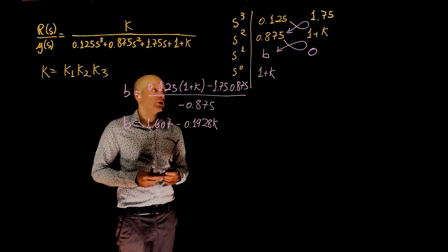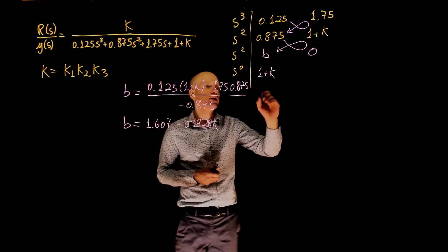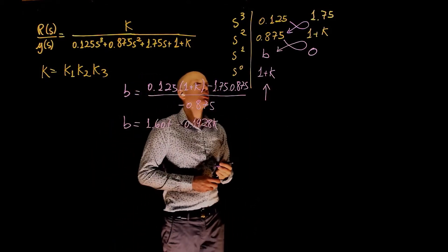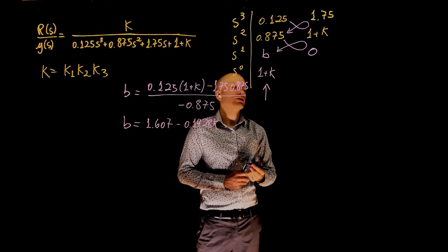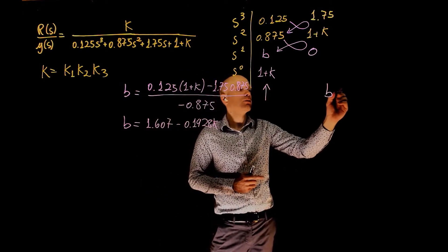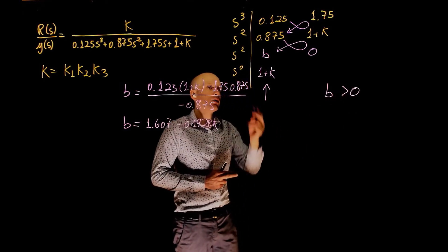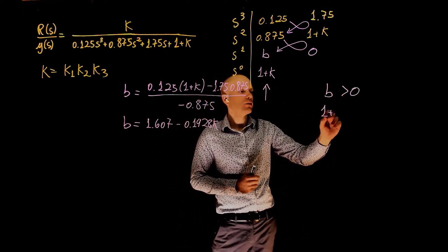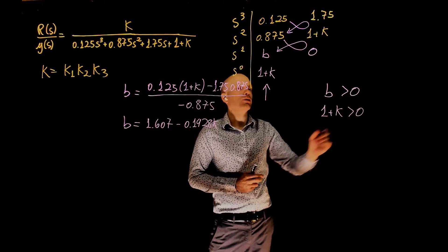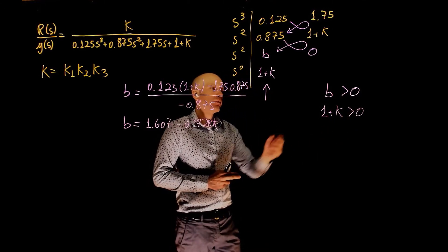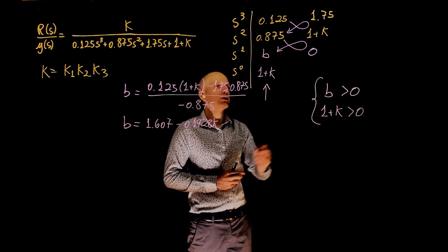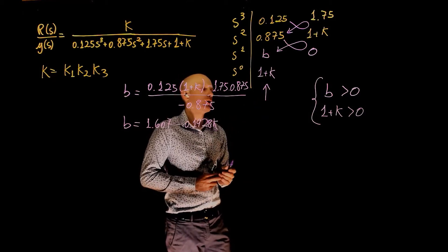What is the condition for stability? The condition for stability is that there are no sign changes in the first column. To ensure stability, we need b to be greater than 0, and we need 1 plus k to be greater than 0. If these two conditions are met, then the system is stable because there is no sign change in the first column.